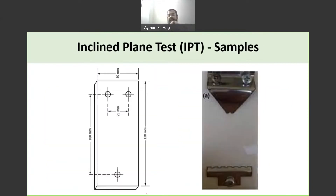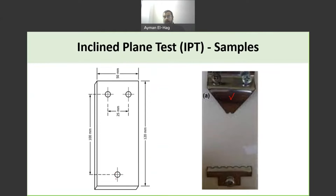Here is how the material looks in the testing. It's basically a slab of material with 50 mm by 120 mm dimensions. It has two holes on top and one hole at the bottom. The top holes are for the high voltage electrode and the hole at the bottom is for the ground. So the material is a very flat slab — it is not an insulator at all.